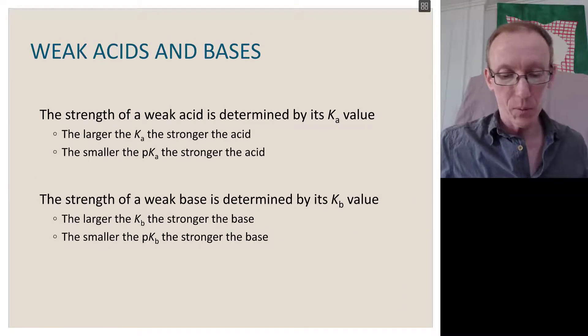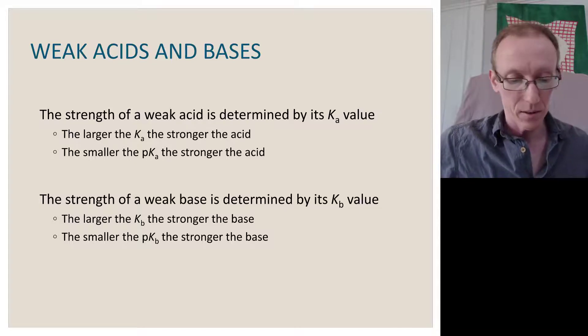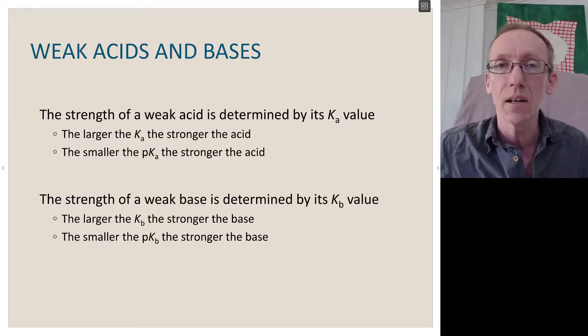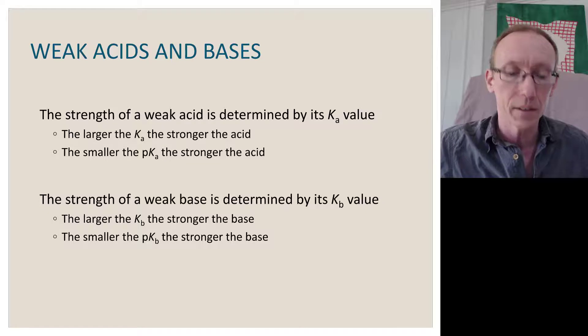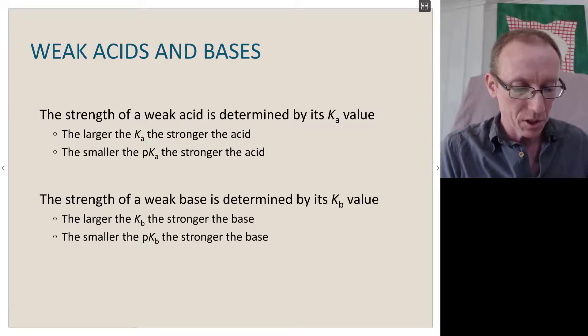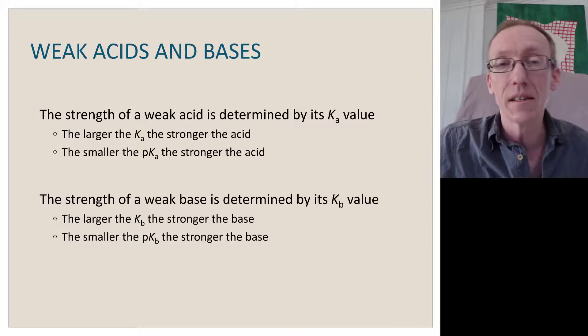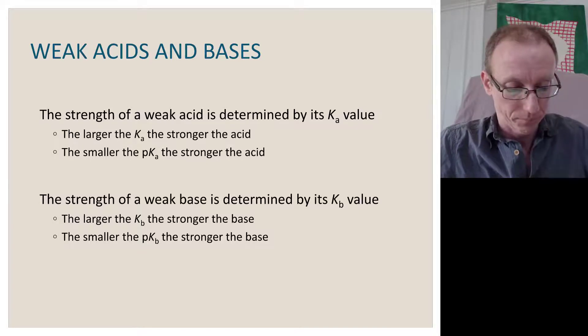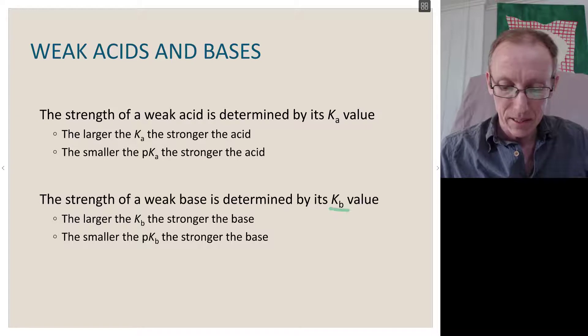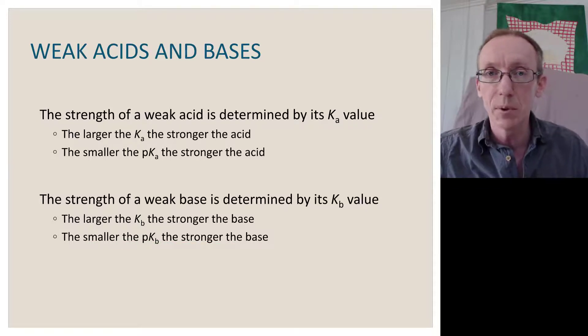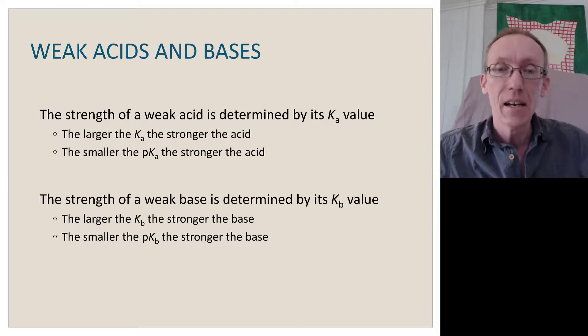The strength of a weak acid is determined by this Ka value, something we can actually measure. The larger the Ka, the stronger the acid. The smaller the pKa, the stronger the acid. Be wary of this inverse relationship. Because it's the negative log value, a large Ka corresponds to a small pKa. An acid with a pKa of 1 is a stronger acid than something that has a pKa of 4. The strength of a weak base is determined by its Kb value. The larger the Kb, the stronger the base. The smaller the pKb, the stronger the base. Once again, there's a reciprocal relationship between the Kb and the pKb.